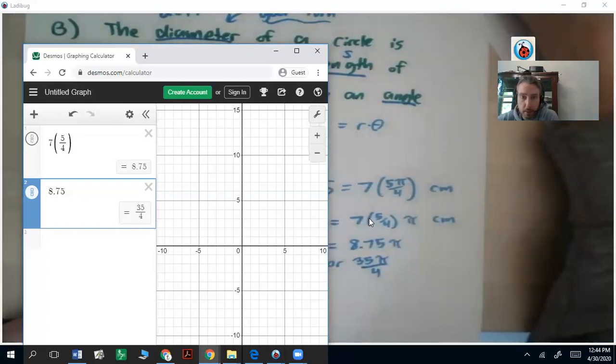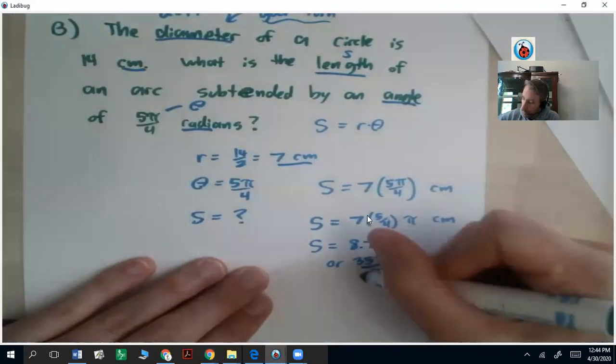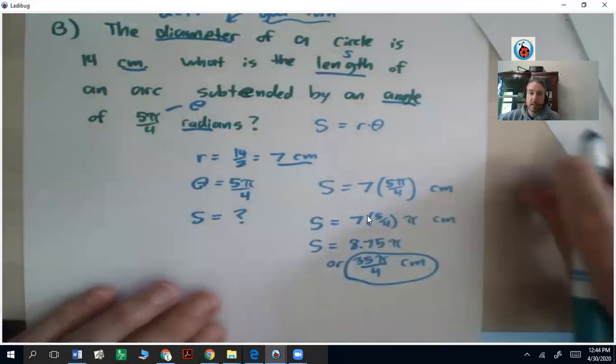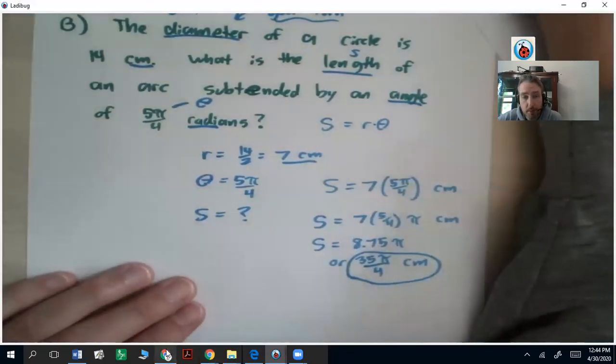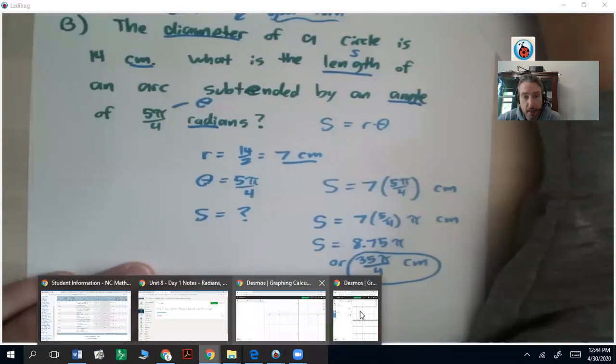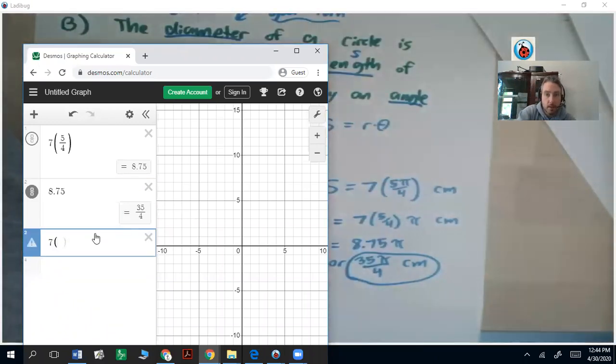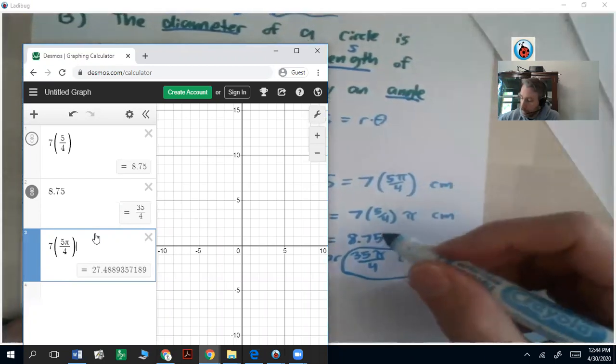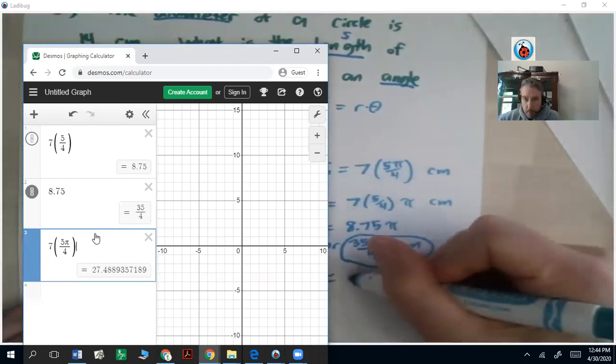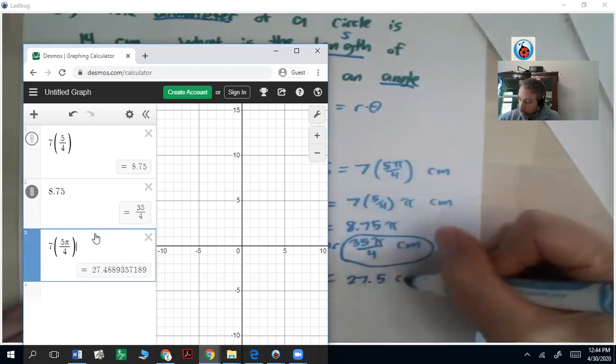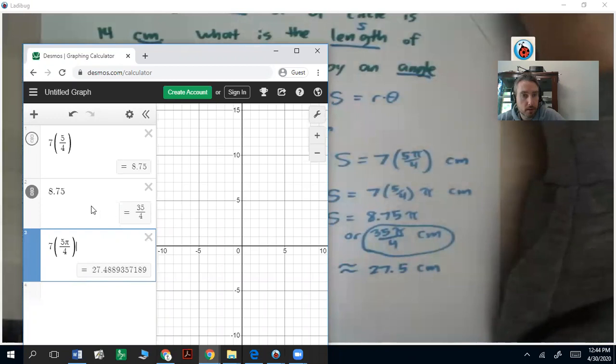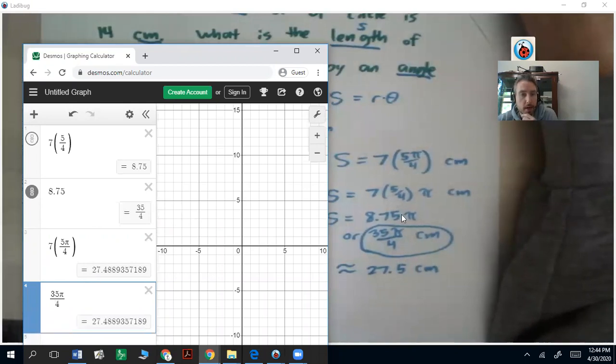Remember, if we're going to write the fraction, we want to write the π on top. So that is in terms of π. That's an exact answer. Sometimes you're asked to round it. So we'll want to also calculate π in and figure out what that is as a decimal. So if you did 7 times 5π over 4, you get about 27.49, which is approximately equal to 27.5 centimeters. So 35π over 4 is 27.5 centimeters.